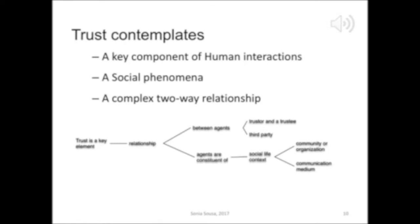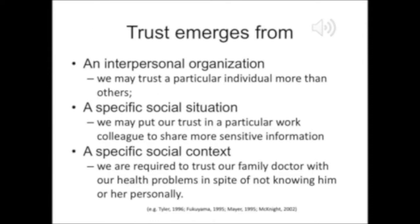In a very simple way, we believe that trust contemplates a key component of human interaction, because it is a social phenomenon and it contemplates a complex two-way relationship. This means that trust is a key element of a relationship — a relationship that can be between two agents or more, a trustor and a trustee, or a third party. Those agents are situated within a social context or a social life, that is, within a community or organization, or it can be mediated by a communication medium like Skype or Google.